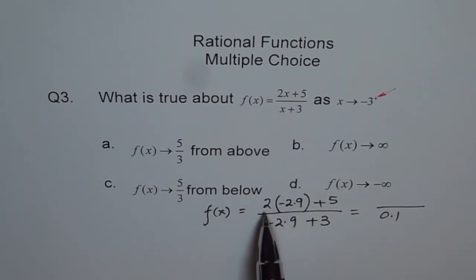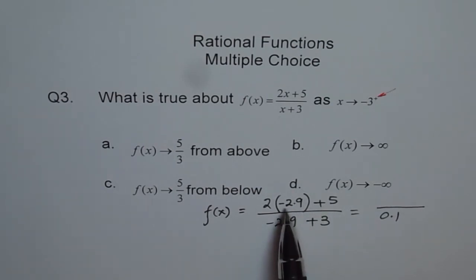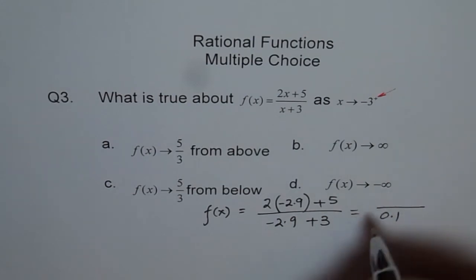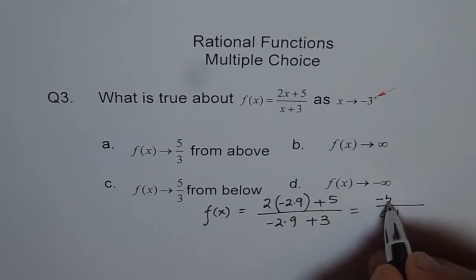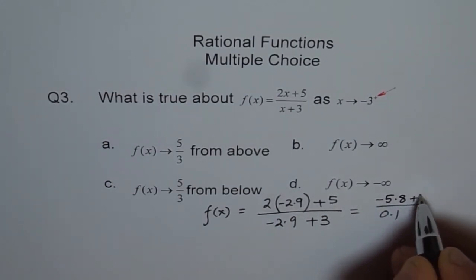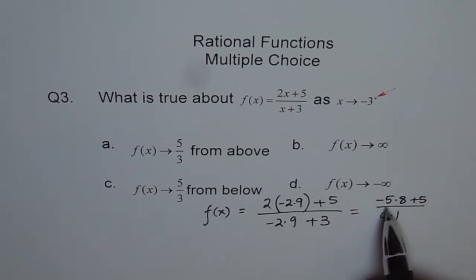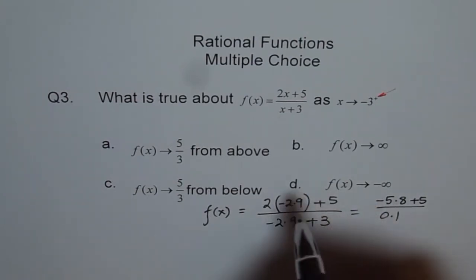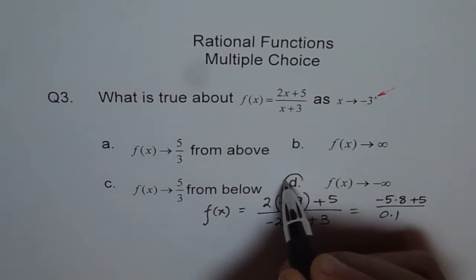In the numerator, 2 times minus 2.9 is a negative number, minus 5.8, which is much larger in magnitude than 5. So minus 5.8 plus 5 gives a negative result. We are approaching infinity towards the negative side. Therefore, the choice is D: f of x approaches minus infinity.